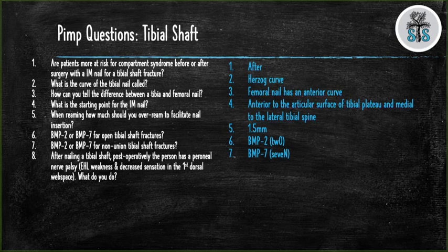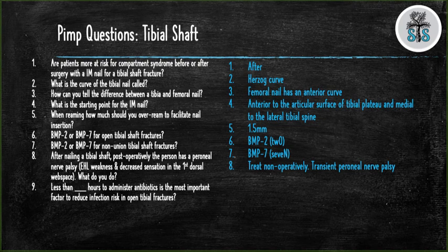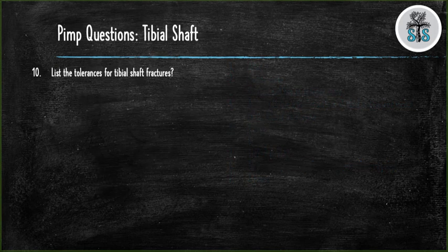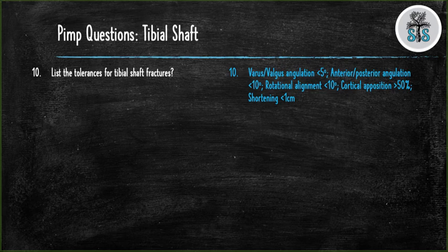Question 8: After nailing a tibial shaft fracture, the patient has peroneal nerve palsy, extensor hallucis weakness, and decreased sensation in the first dorsal web space. What do you do? This is transient peroneal nerve palsy — treat non-operatively. Question 9: Less than how many hours to administer antibiotics is the most important factor to reduce infection risk in open tibial fractures? Within 3 hours. Question 10: List the tolerances for tibial shaft fractures — varus/valgus less than 5 degrees, AP angulation less than 10 degrees, rotation less than 10 degrees, cortical apposition greater than 50%, and shortening less than 1 cm.